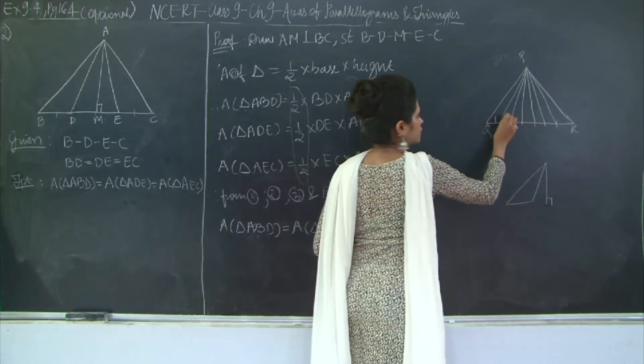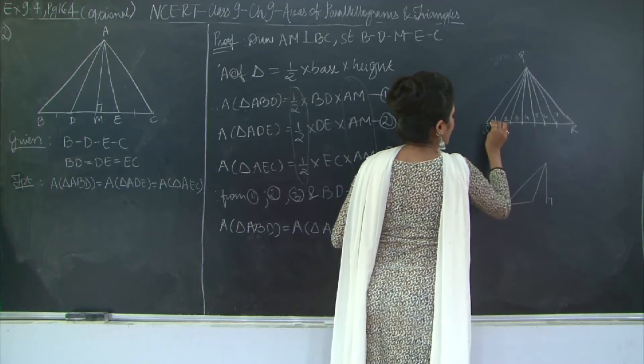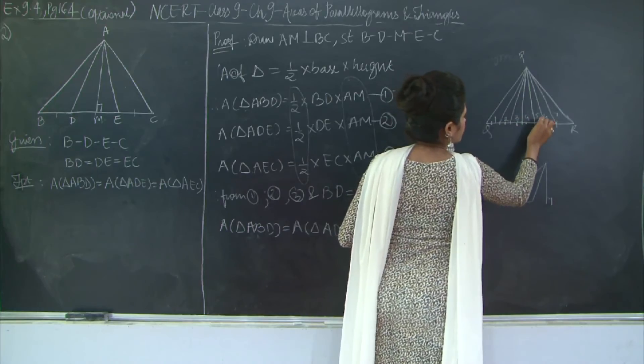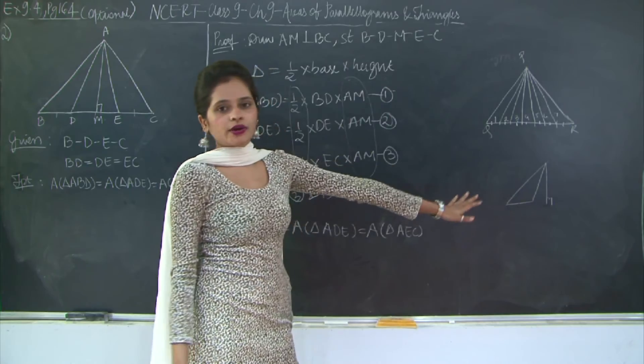How many triangles I have? 1, 2, 3, 4, 5, 6 and 7 and all these lengths are equal. All these triangles are going to have equal area.